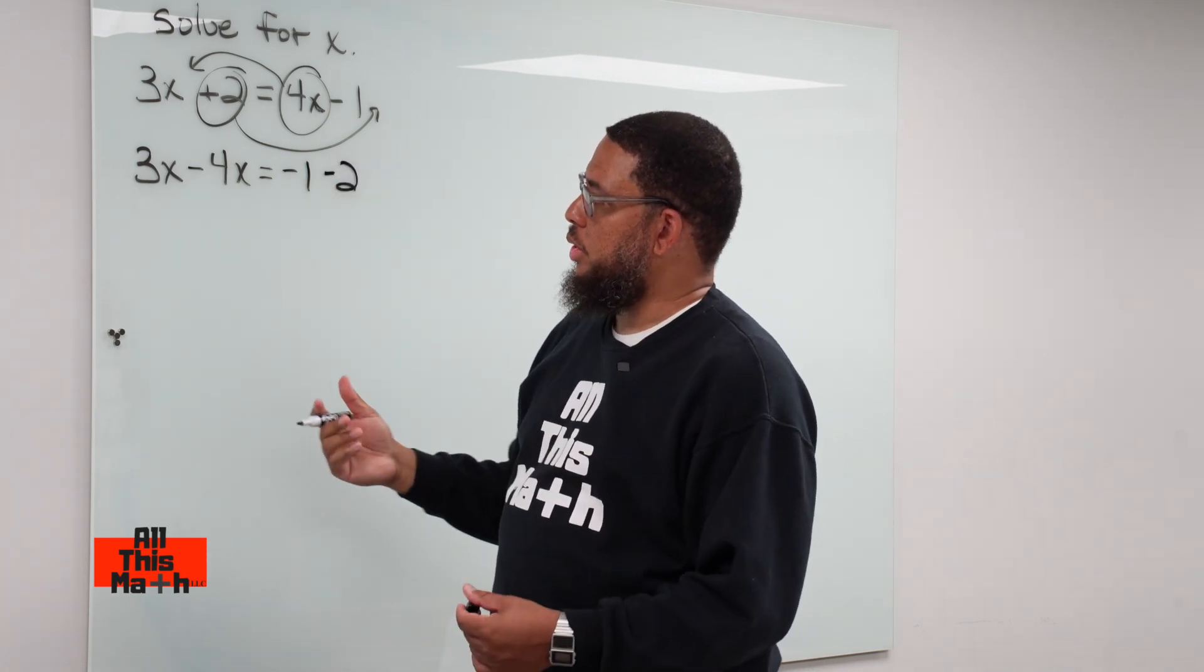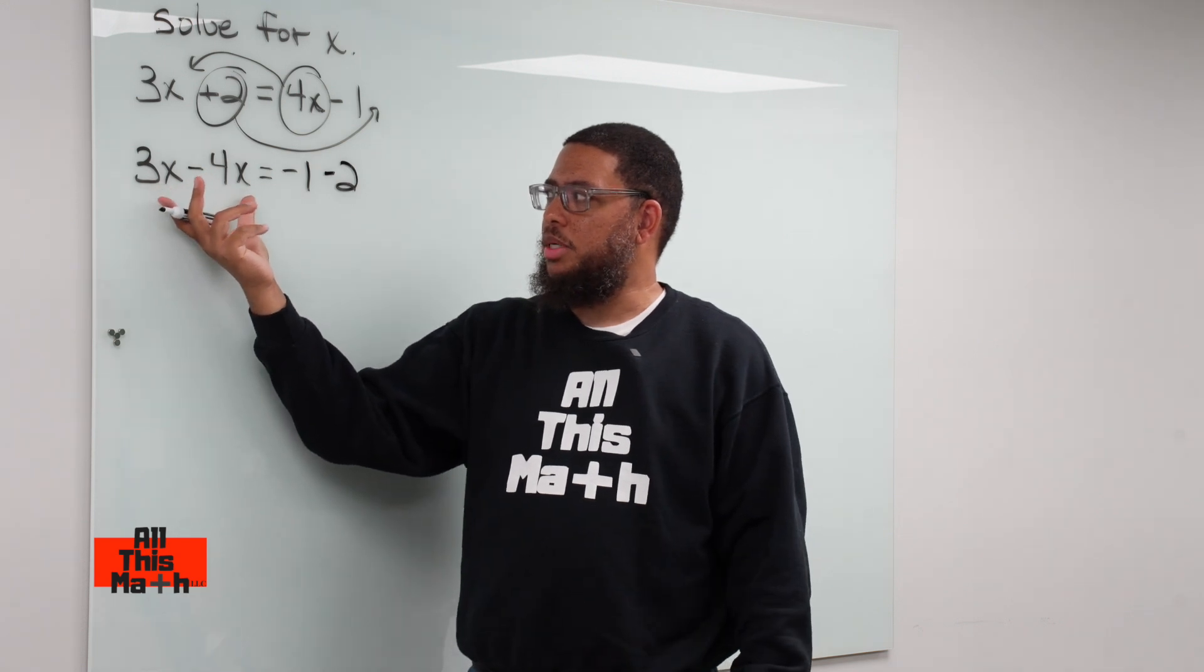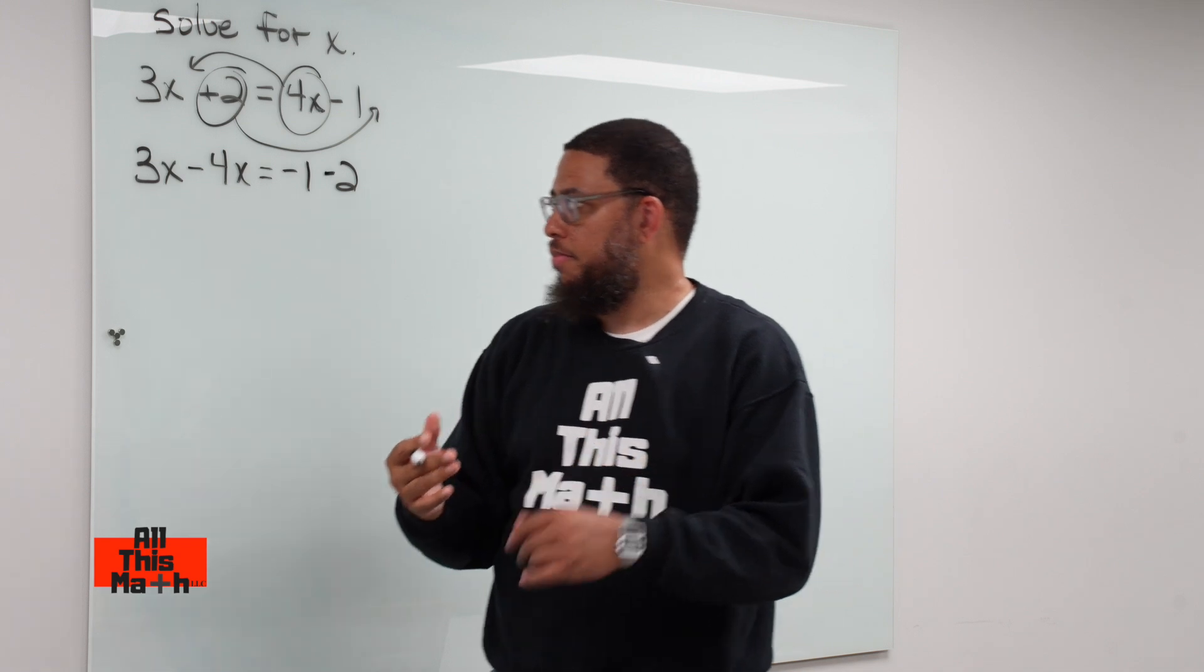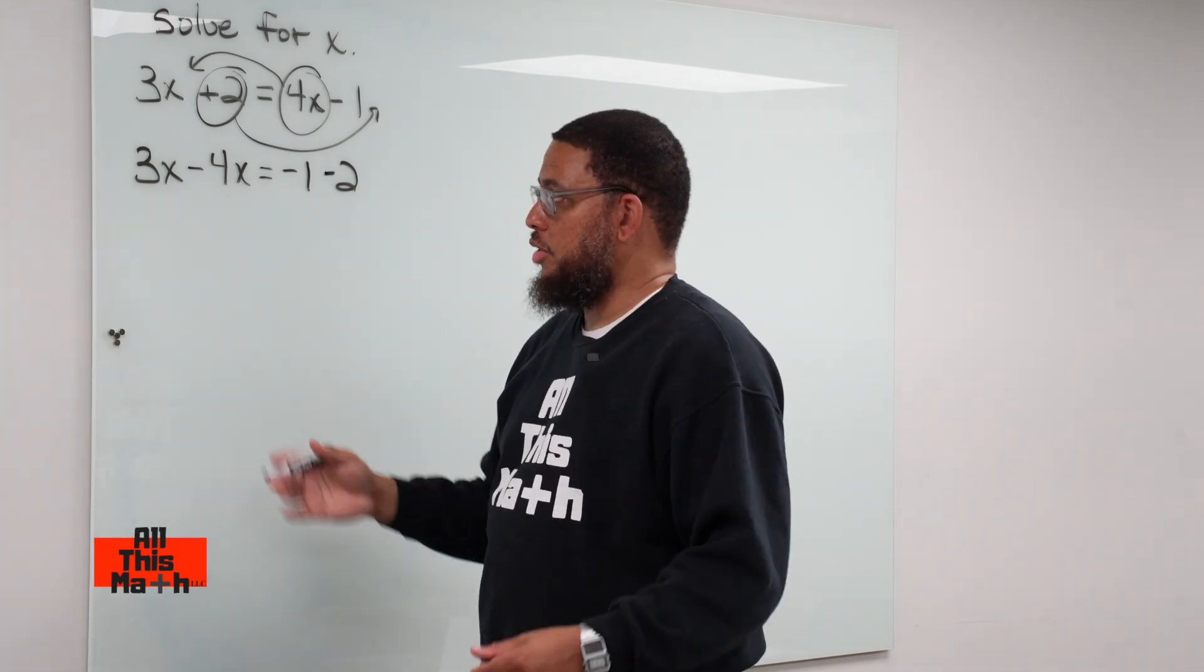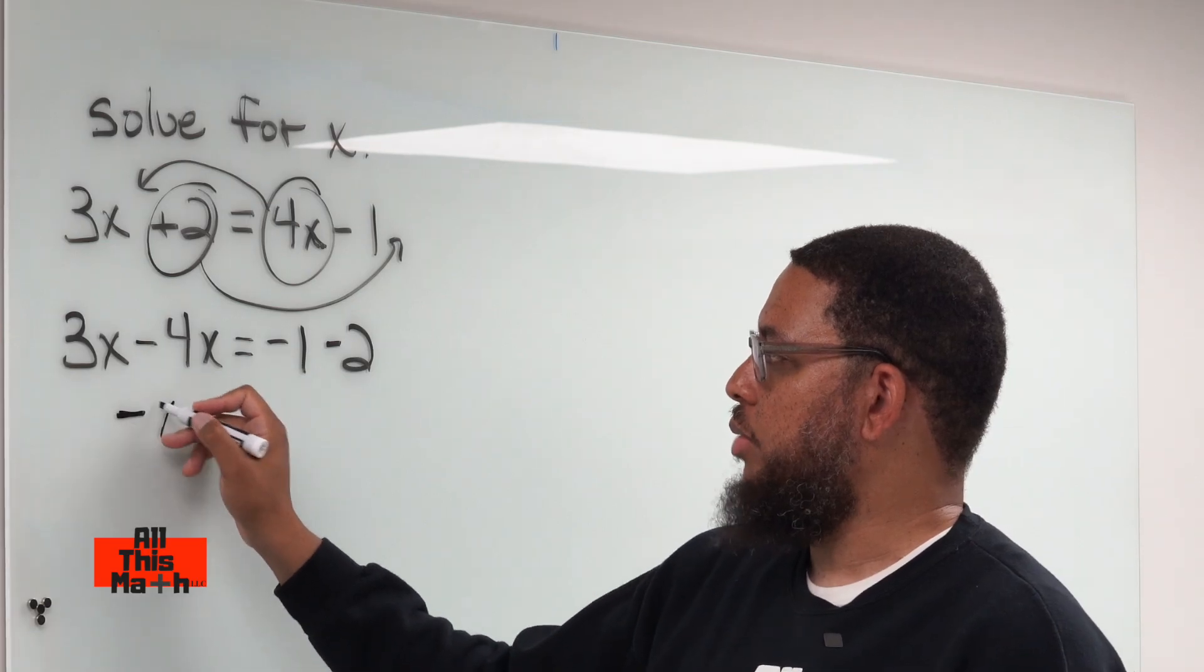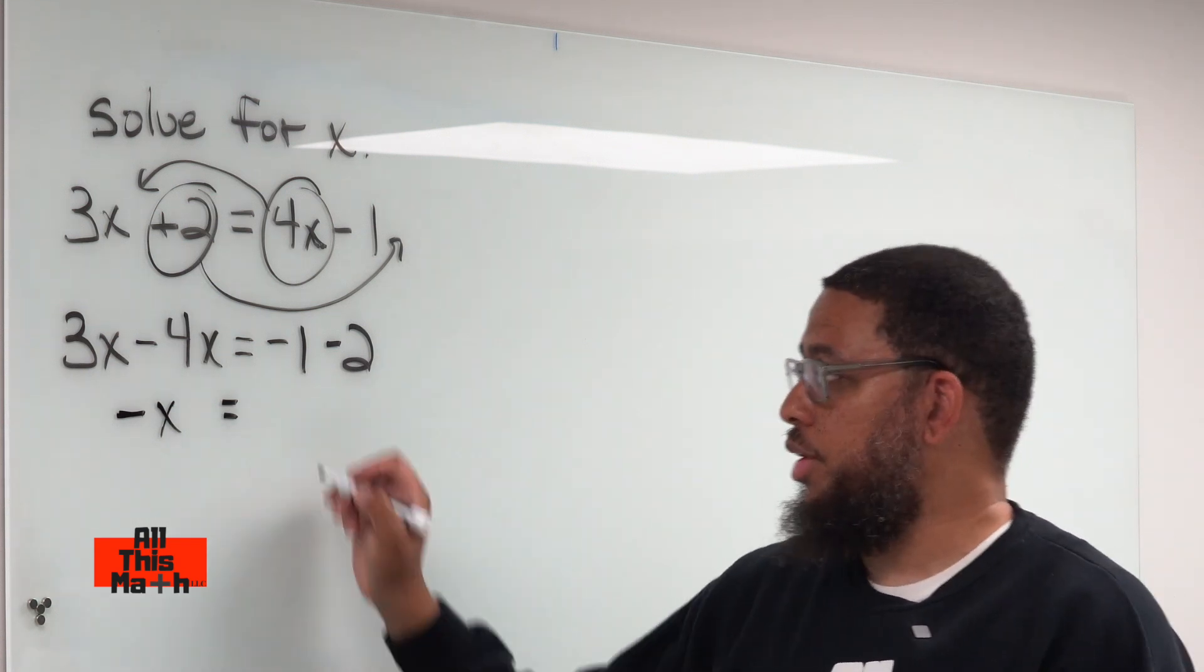Now, why is transposing helpful? Transposing is helpful because once you have the same types of terms together on one side of the equation, you can do something that we call combine like terms. So now we have 3x take away 4x. How many x's are we left with? You got 3 of them, you take away 4 of them, you're left with negative 1 of them, so negative x. Then on the right side, we got negative 1 take away 2. Negative 1 minus 2 is negative 3.